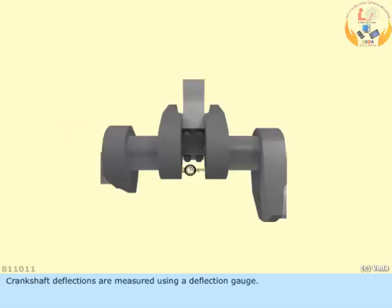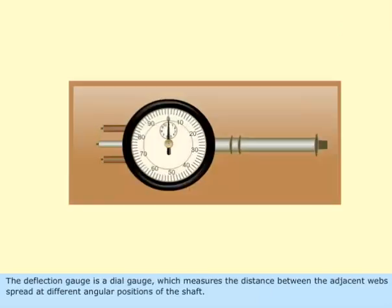Crankshaft deflections are measured using a deflection gauge. The deflection gauge is a dial gauge which measures the distance between the adjacent webs spread at different angular positions of the shaft.